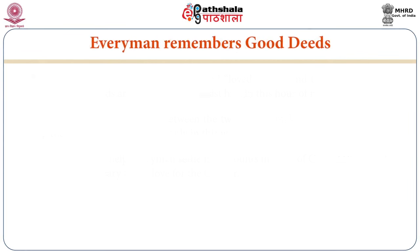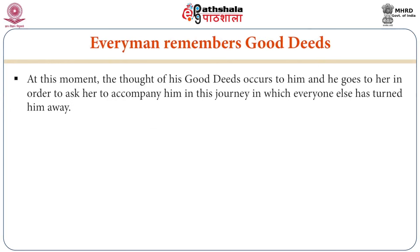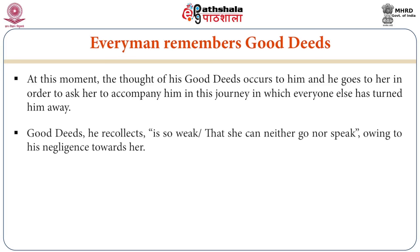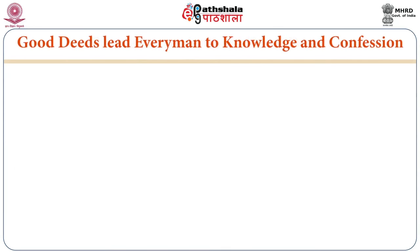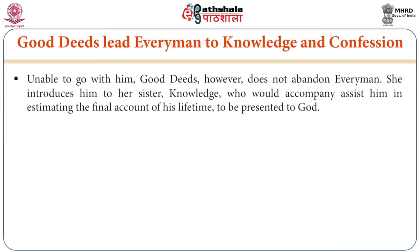Then Everyman remembers Good Deeds. He goes to her and asks her to accompany him, but Good Deeds is so weak she can neither go nor speak — owing to his negligence towards her. In the dialogue between Everyman and Good Deeds, she responds from the ground, saying 'Good Deeds hath me so bound that I cannot steer.' Good Deeds leads Everyman to her sister, Knowledge, who would accompany and assist him in presenting his account before God.